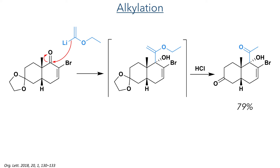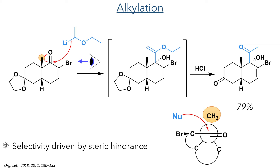This started with the addition of lithium ethyl vinyl ether to the carbonyl group in a stereoselective manner. The product was not isolated and instead was directly hydrolyzed using hydrochloric acid, which deprotected the acetal protecting group and also hydrolyzed the ether to form the ketone. This reaction produced a single diastereomer and the selectivity was driven by the steric hindrance of the bicyclic system.